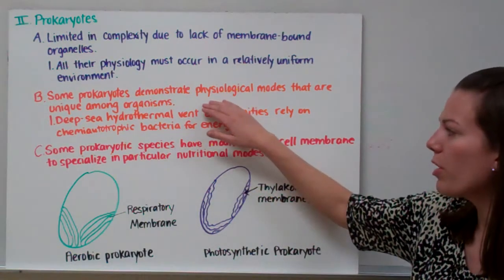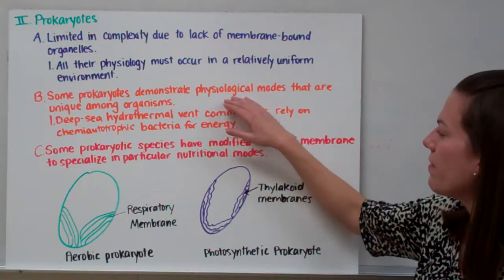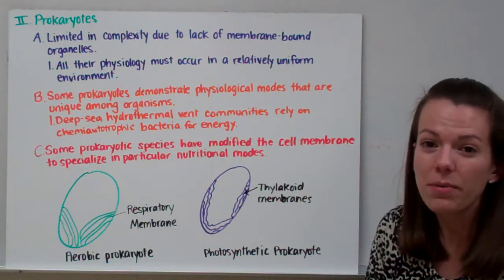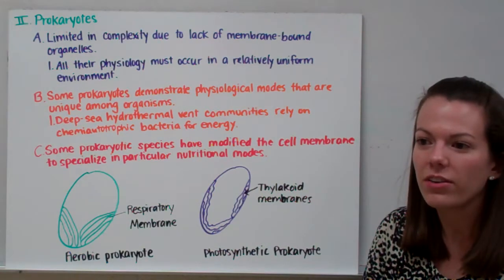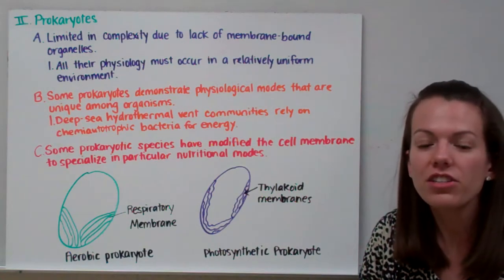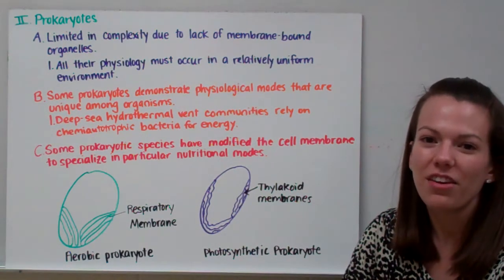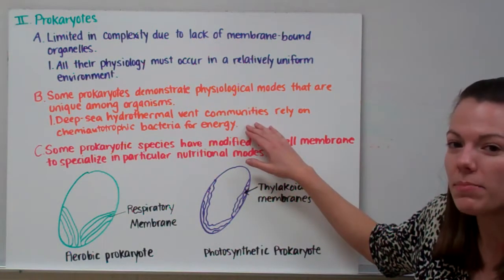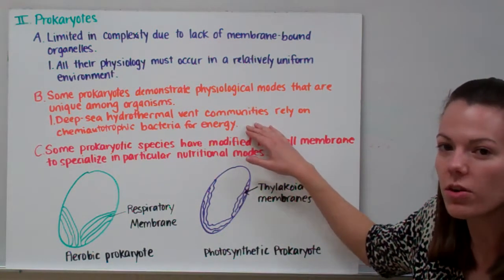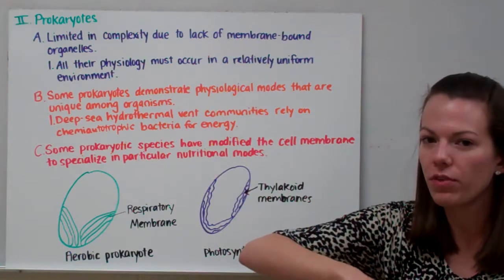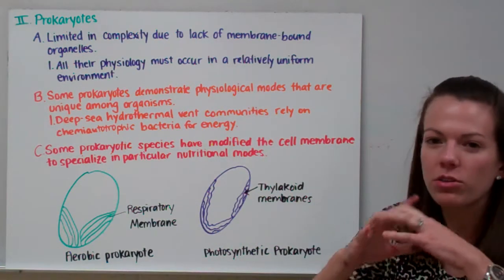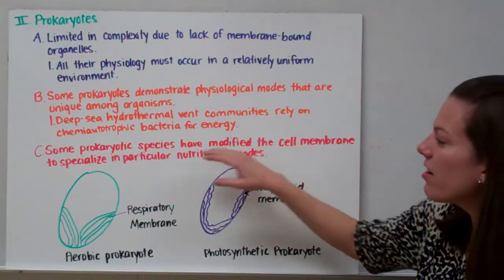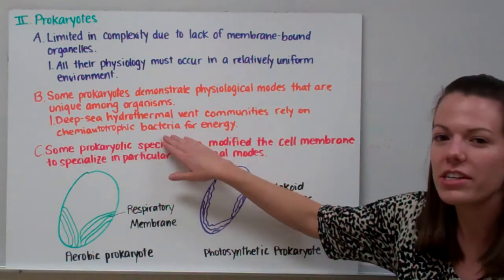Some prokaryotes demonstrate physiological modes that are unique among organisms — life functions different from any other living thing on Earth. For example, in deep-sea hydrothermal vent communities at the bottom of the ocean where different chemicals are oozing out of the Earth's crust, we have bacteria called chemiotrophic bacteria.